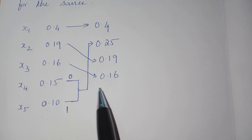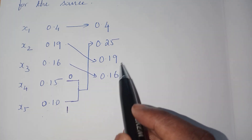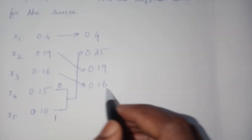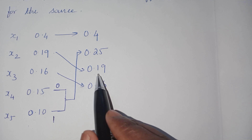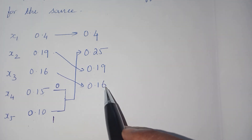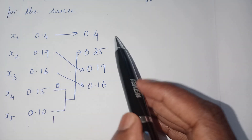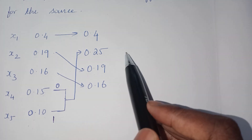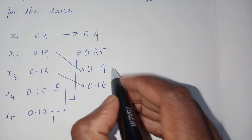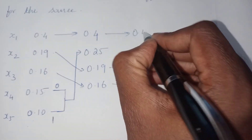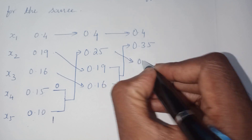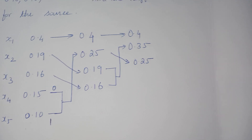Repeat the steps again. Add the least two probabilities from the new arrangement. The least two are now 0.19 and 0.16. Adding them gives 0.35. Rearranging in descending order for the next stage: 0.4 comes first, then 0.35, then 0.25.